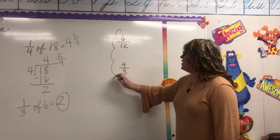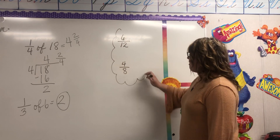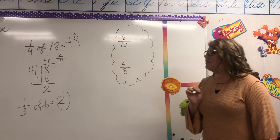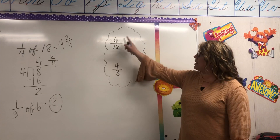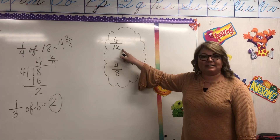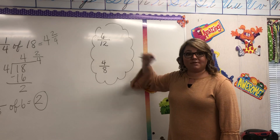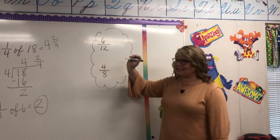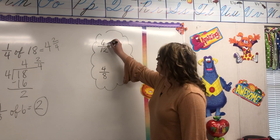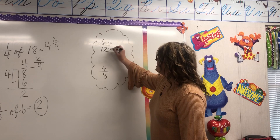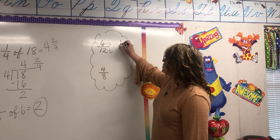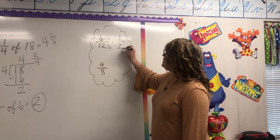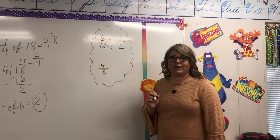Reducing fractions right here. When you're reducing, remember that trick: if the numerator can divide into the denominator, that's what you divide by. So can six go into 12? Yes, so we're gonna divide by six. Six divided by six is one, and 12 divided by six is two. So my answer is one half.